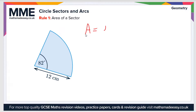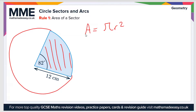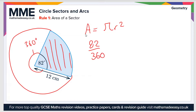To find the area of a sector, let's first remind ourselves that the area of a circle is pi r squared. If you imagine this sector as a fraction of a circle with the same radius — 12 centimeters in this case — we know that the full angle in a circle is 360 degrees, but the angle in this sector is 82 degrees. So the fraction of the circle taken up by this sector is 82 divided by 360.